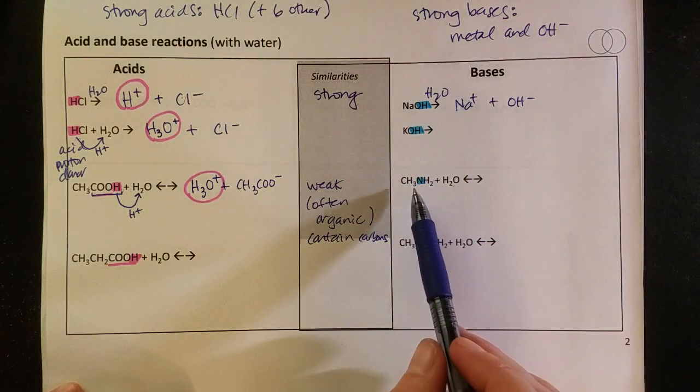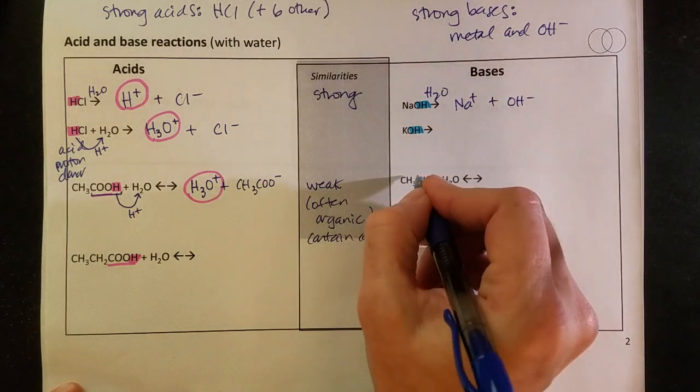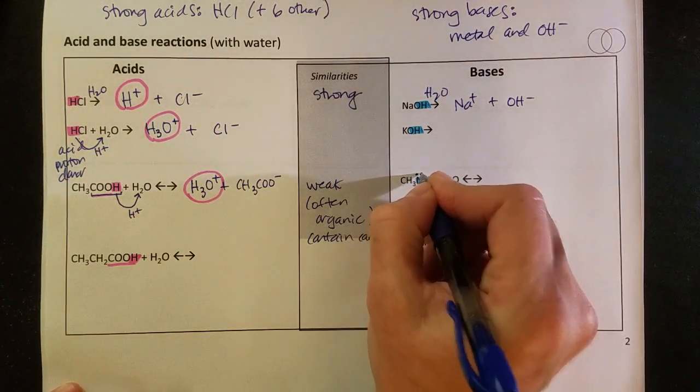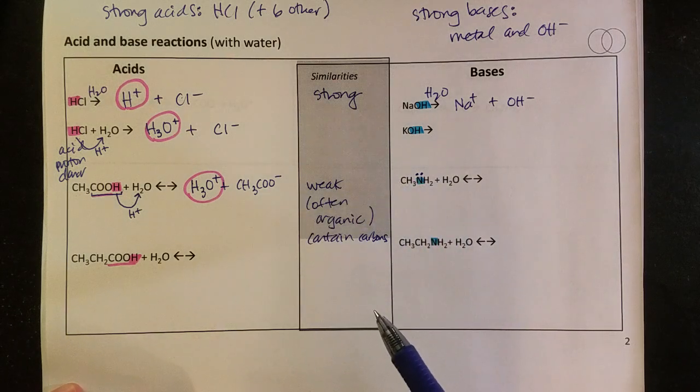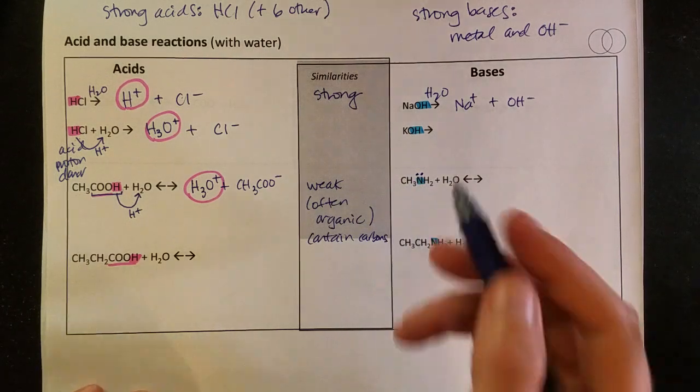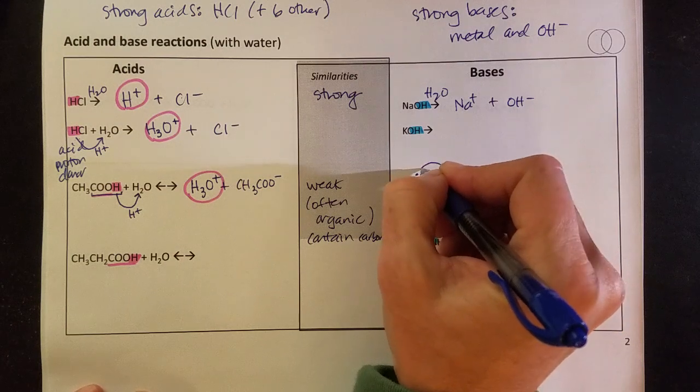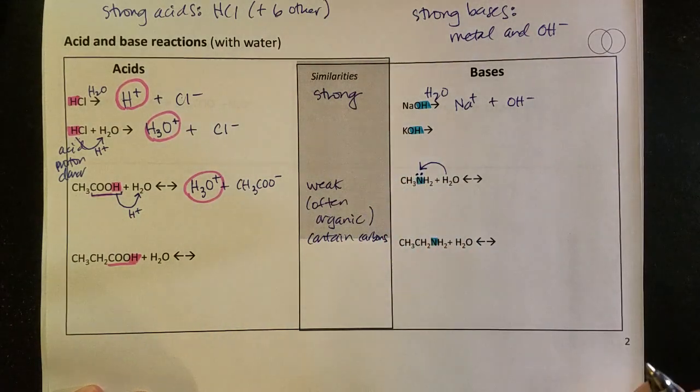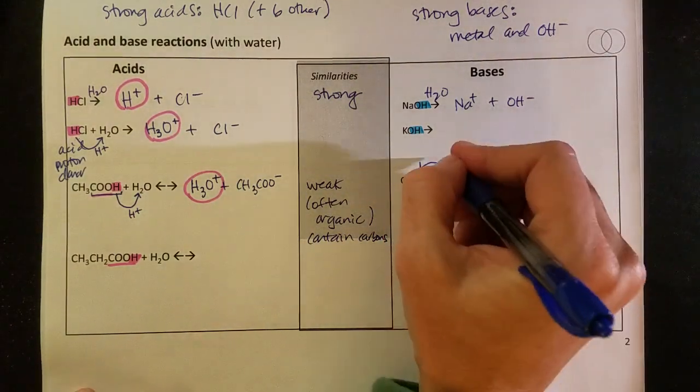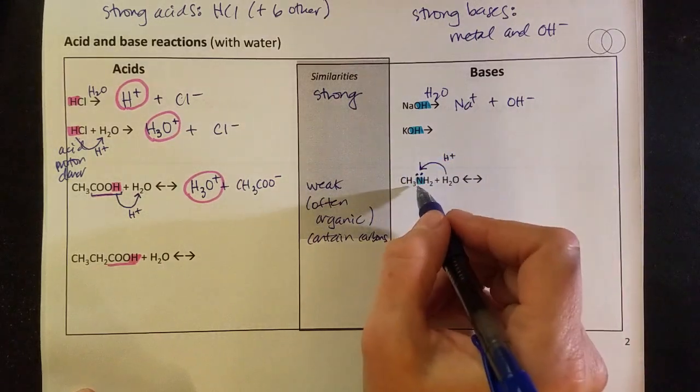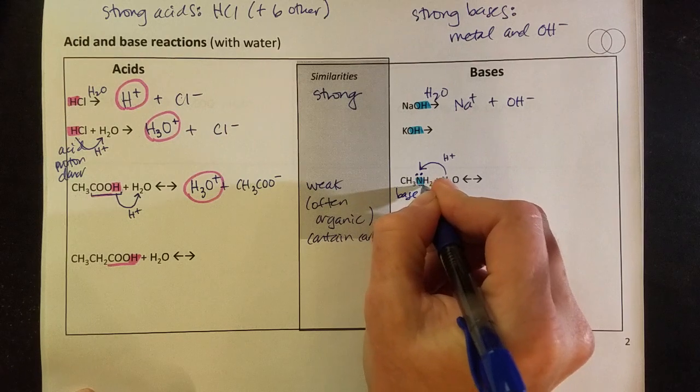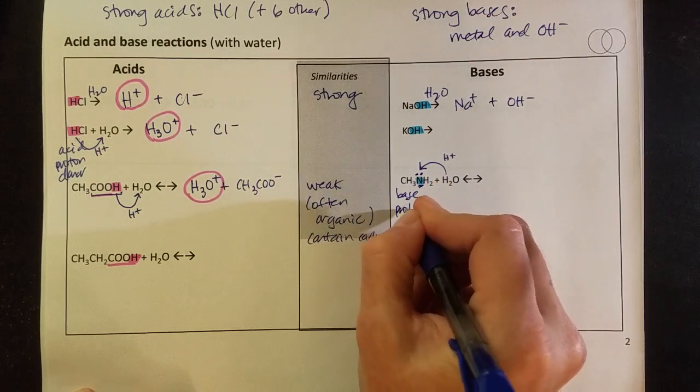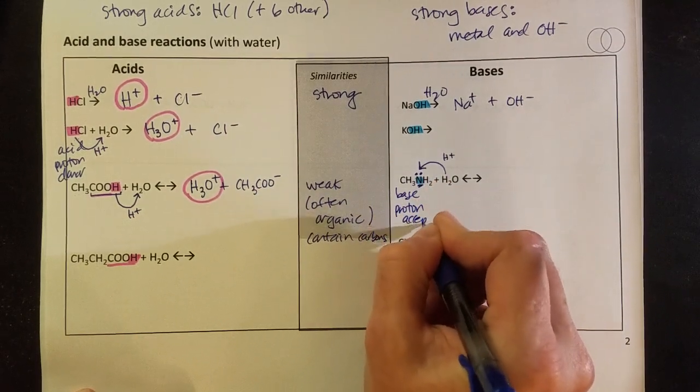Down here is a weak base that would have a nitrogen in it. And if you can think back to Lewis structures, there's a lone pair of electrons on that nitrogen. And that's going to be the location that's able to accept a proton right on that nitrogen. So my H plus is going to get donated over here. This is a base from that nitrogen there, and so I would say that this is a proton acceptor.